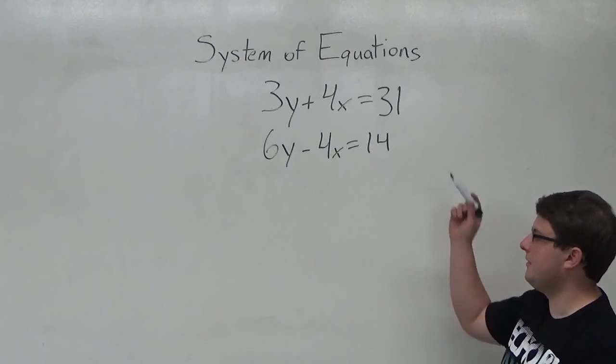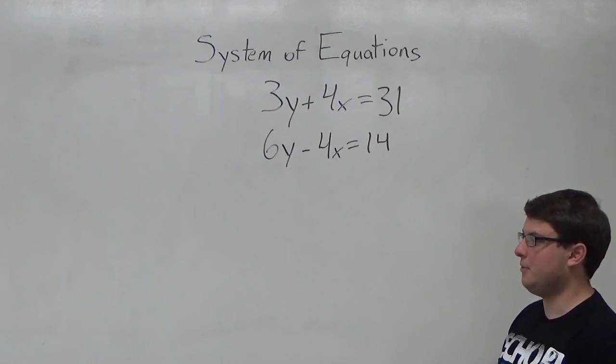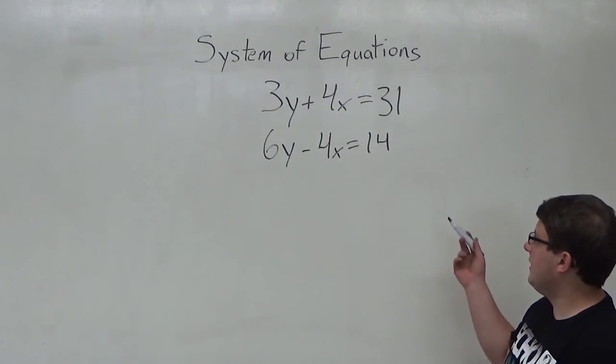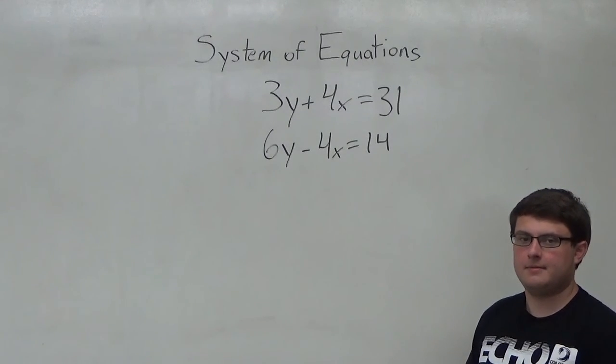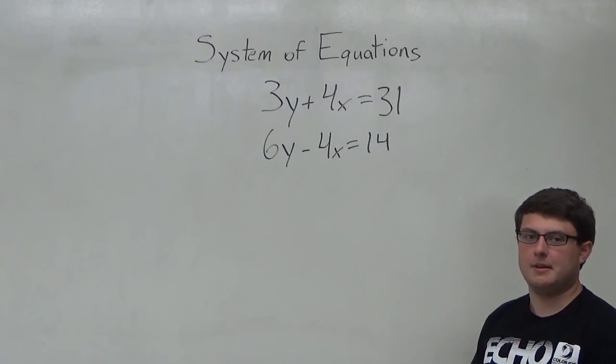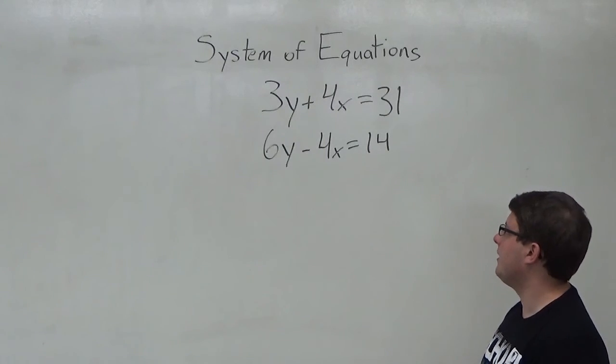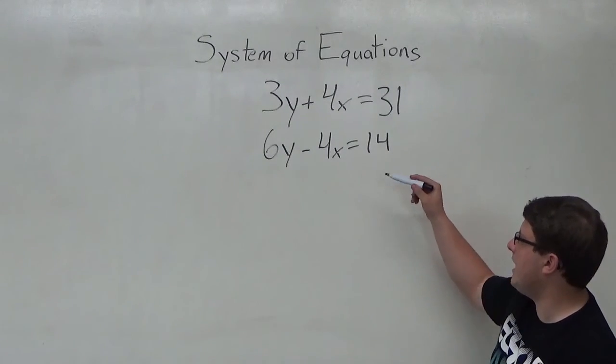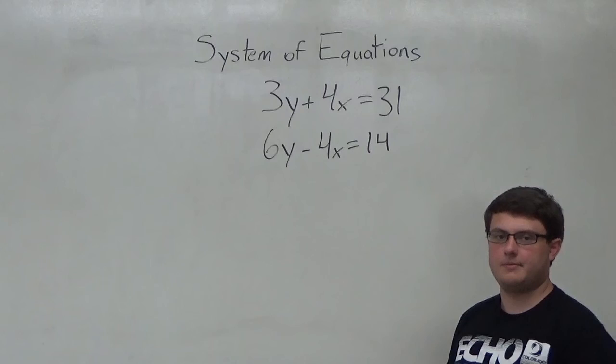So what I have here are two equations written up on the board. I'm going to solve these using linear combination. When you're using the linear combination method, you want to look for whether you can combine x or y in order to get zero.